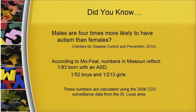According to the Centers for Disease Control and Prevention in 2010, males are four times more likely to have autism than females. According to MOFI, the numbers in Missouri reflect 1 in 83 children are born with autism and 1 in 52 males as opposed to 1 in 213 females, which, if you do the math, will still give you about a 4 to 1 ratio. These numbers are calculated using 2006 CDC surveillance data from the St. Louis area.